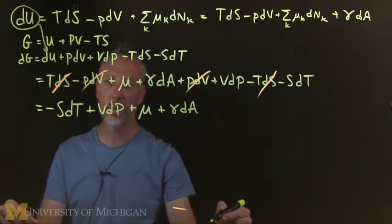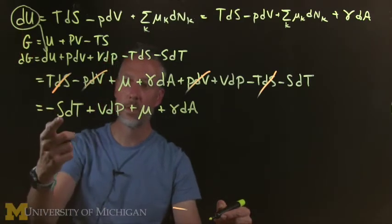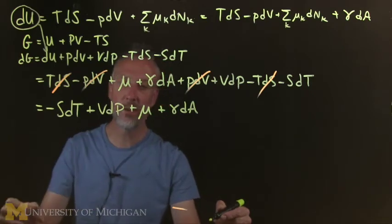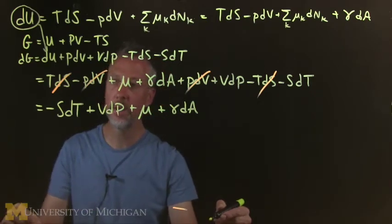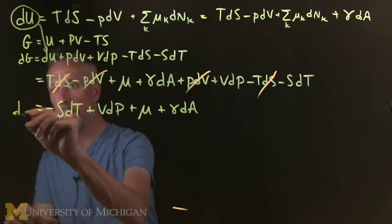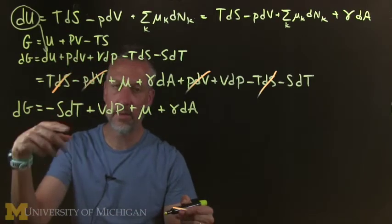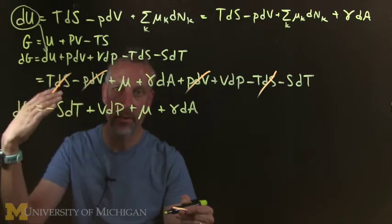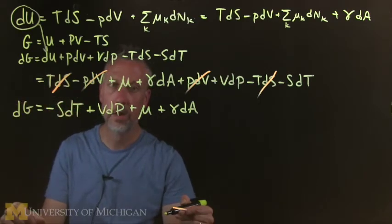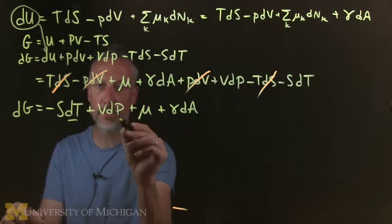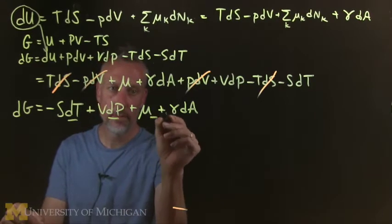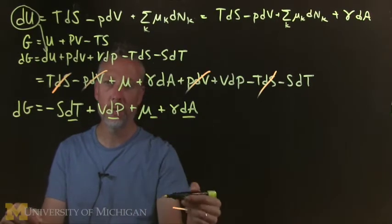So what we see is that we can include the surface tension times the change in area in our dG, which is good because dG is a meaningful parameter that has an extremum principle. It's minimum at equilibrium when we control the temperature, the pressure, the number of molecules, and the area.